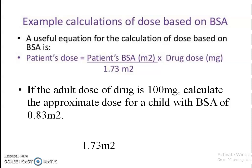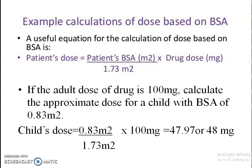Now we will see an example of calculating a dose based on BSA. The calculation method is: patient dose equals (patient BSA in meter square divided by 1.73 meter square) multiplied by the drug dose in milligrams. If an adult dose of a drug is 100 mg, the appropriate dose for a child with a BSA of 0.83 meter square is calculated as 0.83 ÷ 1.73 × 100 mg, which gives 47.97, rounded off to 48 mg.